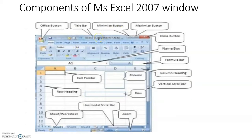This is the title bar. This is the MS Office button. The MS Office button is used to create a new file, save a file, and also to close the file. On the right side of the title bar there are three buttons: the Minimize button, the Maximize button, and the Close button.